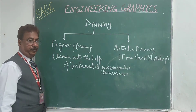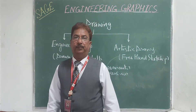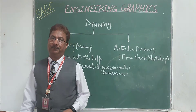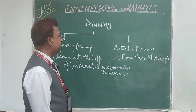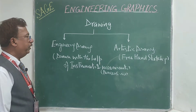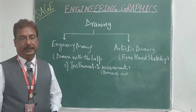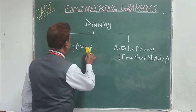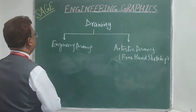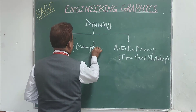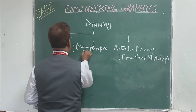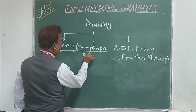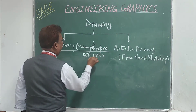Engineering drawing is drawn with the help of instruments and dimensions. We are going to use simple tools, including those from the geometry box you already used in school. There are two types of drawings: engineering drawing and artistic drawing, which is also known as freehand drawing. Instead of the word 'drawing,' we also use the word 'graphics,' so this subject is called engineering graphics. The subject code for this subject in RGPB will be BT105.